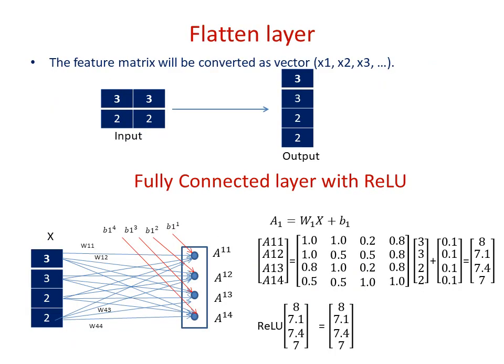The role of the flatten layer is to convert a matrix into a vector. The input to the flatten layer is the output of the max pooling layer — a 2×2 matrix — and the output is a 4×1 vector. The next layer is the fully connected layer with RELU activation. The output of the flatten layer is treated as input for this fully connected layer. The fully connected layer has 4 neurons, each receiving a bias: B11, B12, B13, and B14.